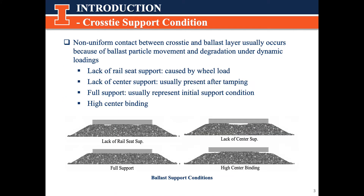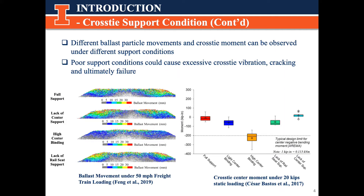The other aspect we are studying here is cross-tie support condition. Four common support conditions are shown in the bottom figure: lack of end support, which is usually caused by rail load; lack of center support, which is usually present after tamping; full support, usually representing the initial support condition; and high center binding. The two figures show different ballast movements and cross-tie center movements in different support conditions. Previous research has proved that some poor support conditions could cause excessive cross-tie vibration, cracking, and eventually failure. Thus, it is significant to study the effects of cross-tie support conditions together with mixed traffic patterns.